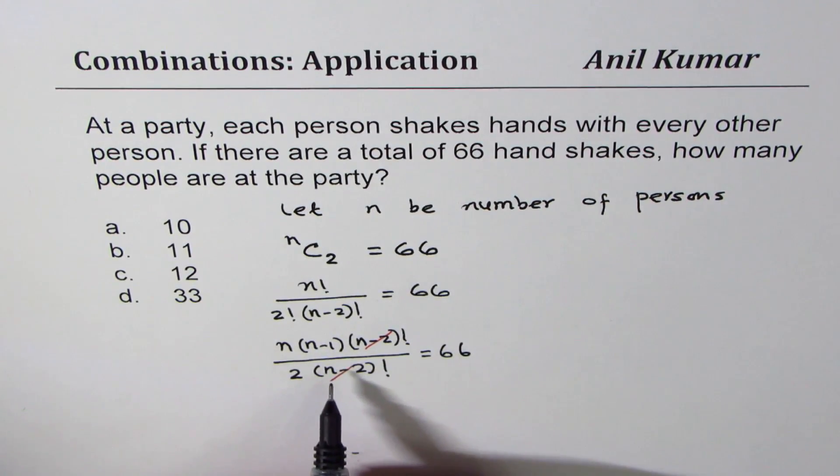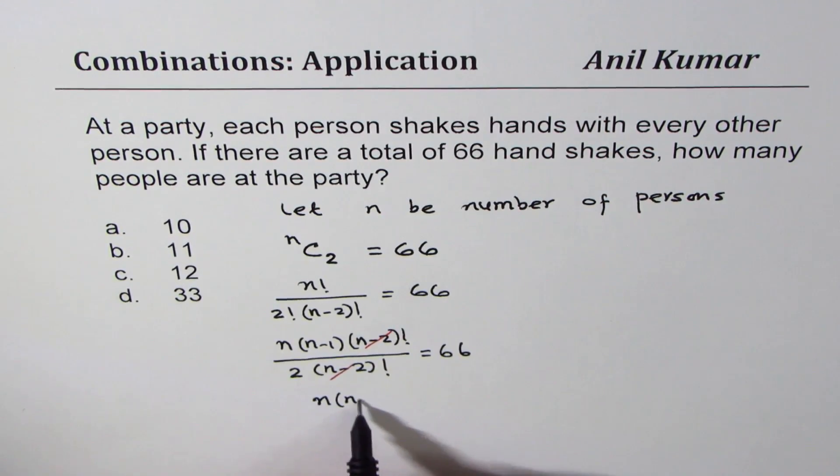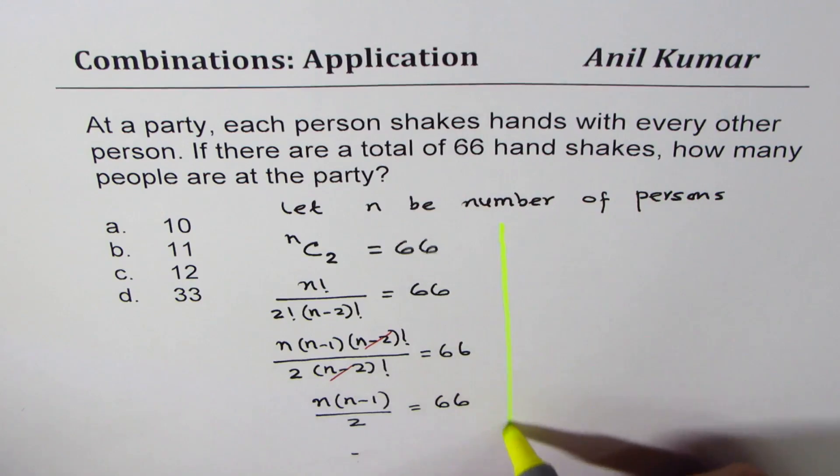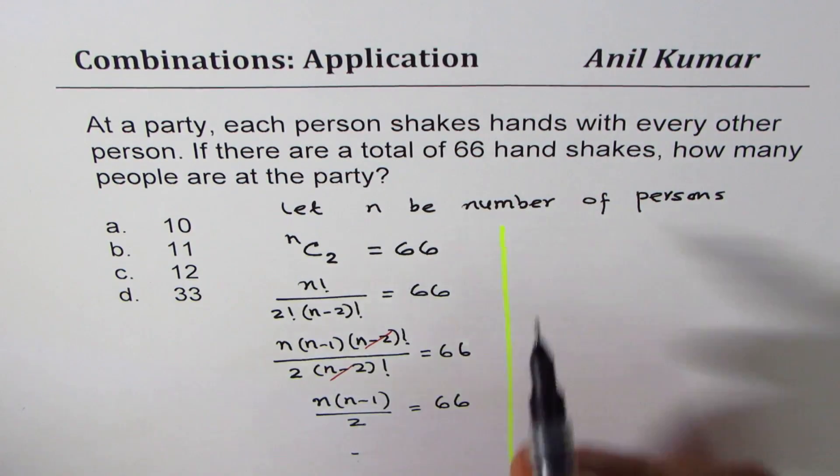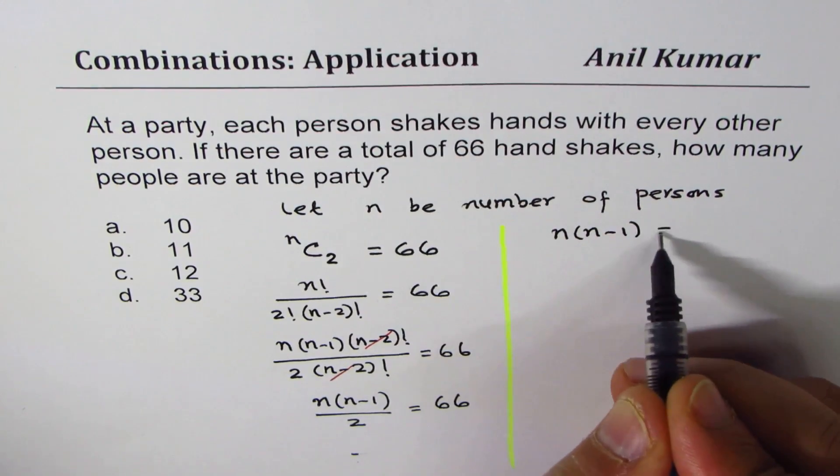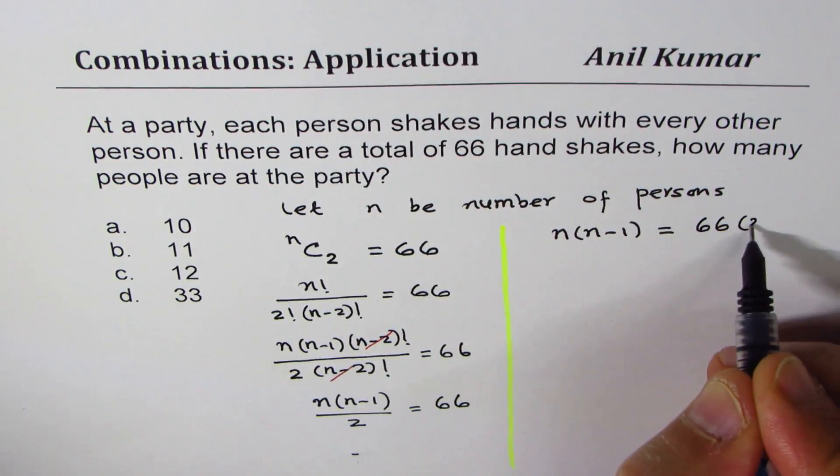So we get a quadratic equation, which is n times n minus 1 over 2 equals 66. So let me take this equation to the right side and then solve for it. The equation is n times n minus 1 equals 66 times 2.